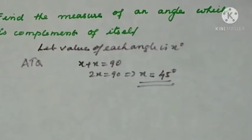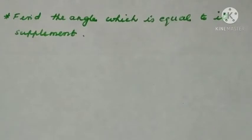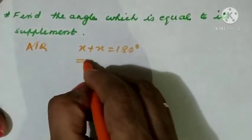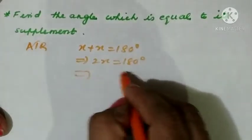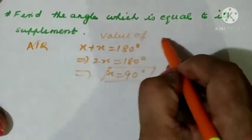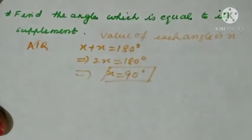The angle equal to its own complement is 45 degrees. Next: find the angle which is equal to its supplement. Supplementary angles sum to 180 degrees, and each is called a supplement of the other. Since both angles are equal, let each be x: x plus x equals 180 degrees, so 2x equals 180, giving x equals 90 degrees. The value of the angle equal to its supplement is 90 degrees.